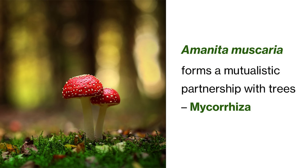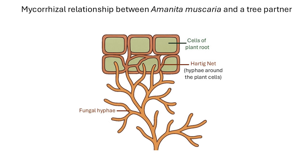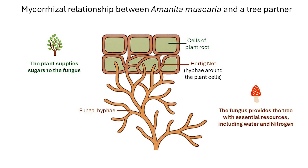One of the most fascinating traits of Amanita muscaria is its ability to form a mutualistic partnership with trees, known as mycorrhiza. In this association, the fungus wraps its hyphae around fine tree roots and weaves a network between root cells. This structure, called the Hartig net, is where nutrients are exchanged. The tree provides sugars, while the fungus supplies water and essential minerals like nitrogen.